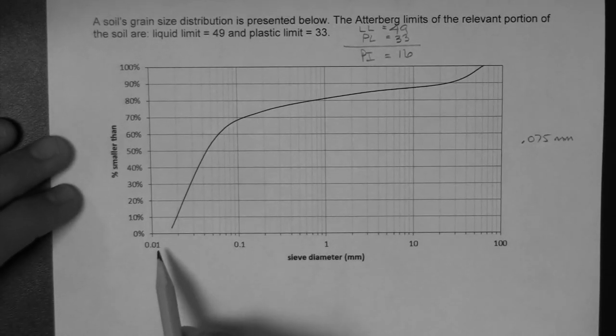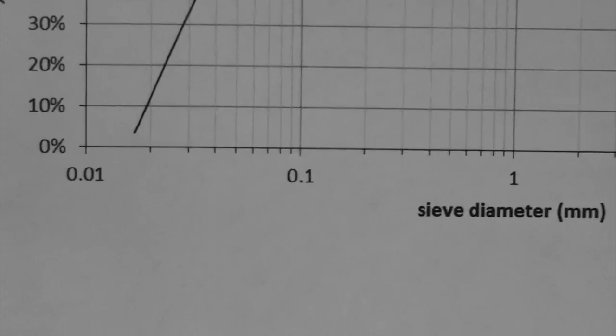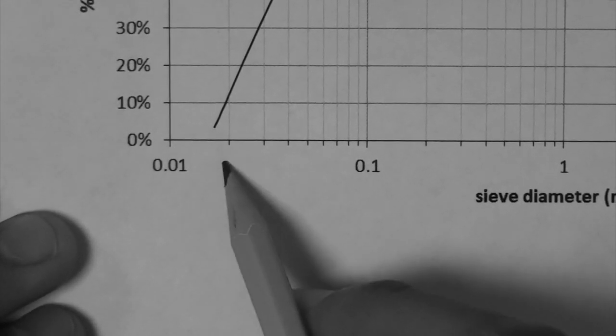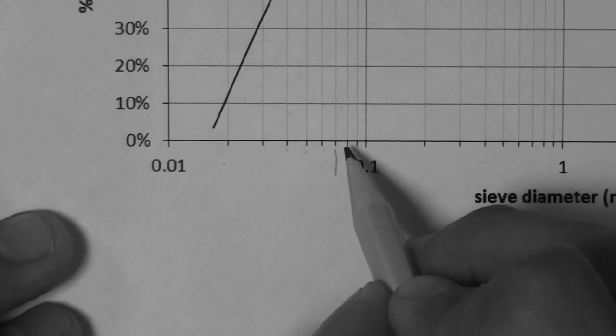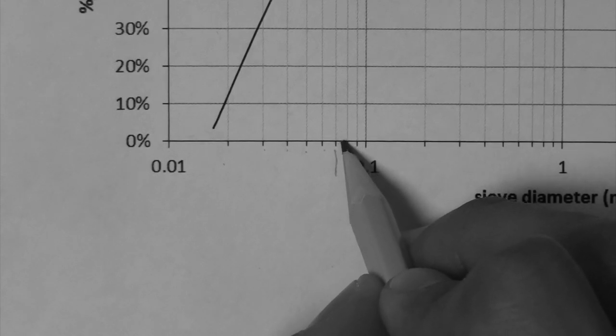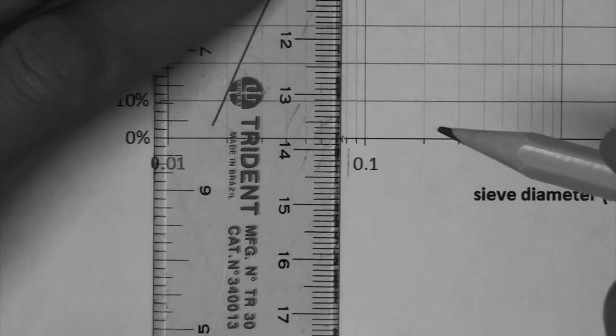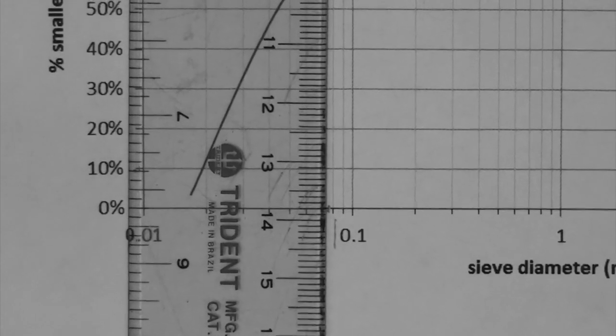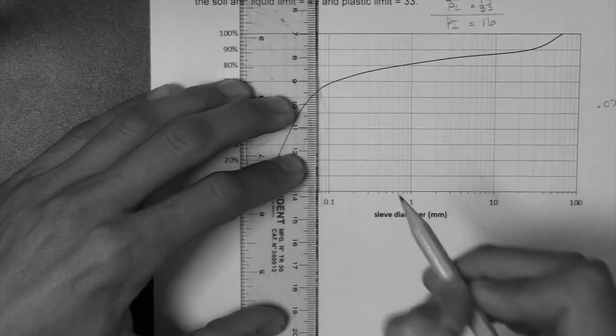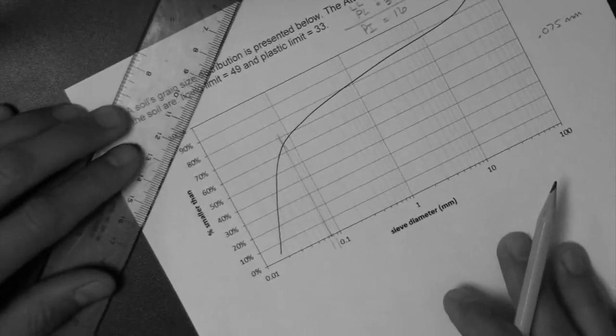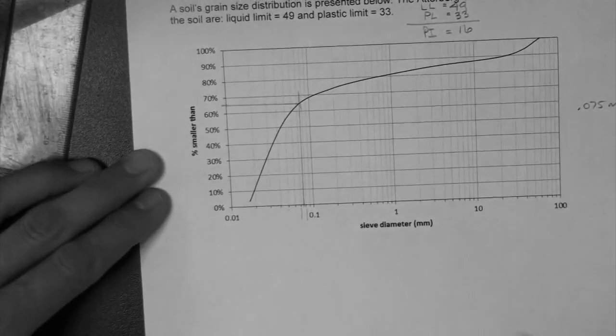So how do we do this? Well, we go here to the log scale, and we read where the 0.075 millimeter mark is. So, let's zoom in. 0.01, 0.02, 0.03, 0.04, 0.05, 0.06, 0.07, 0.08. So, 0.075 is not at the center, but a little bit to the right. And remember we are approximating, so to be close enough is okay. So now what we do is we take that point and we draw a vertical line up until it touches our grain size distribution. And then we read the percentage.